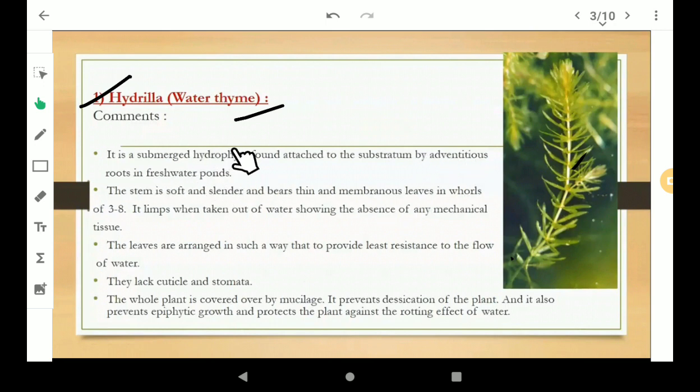Hydrophytes are the plants which only grow in water or on water. It is found attached to the substratum, the underlying substance, by adventitious roots in freshwater. Adventitious roots are roots that form from any non-root tissue.